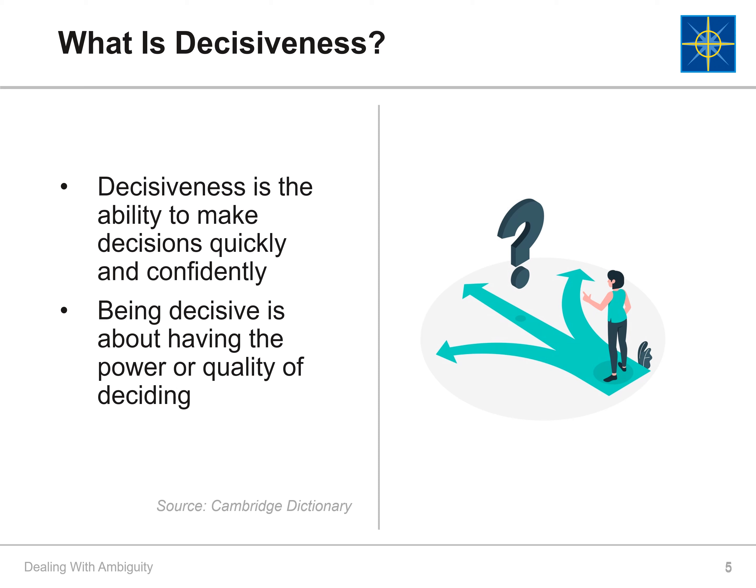In order to talk more about decisiveness, let's first define it. Decisiveness is the ability to make decisions quickly and confidently, by a person or a team. Being decisive is about having the power or quality of deciding.